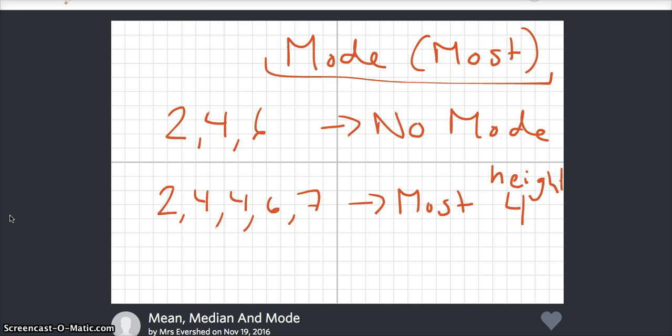You would only really want to use mode if the majority of your numbers were repeated. Otherwise, it's not an accurate representation of the data.